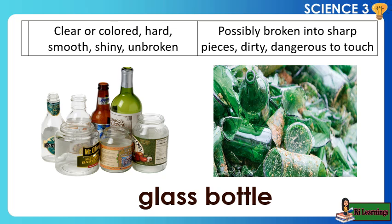Glass bottle: Before disposal — clear or colored, hard, smooth, shiny, and unbroken. After three days of disposal — possibly broken into sharp pieces, dirty, and dangerous to touch.